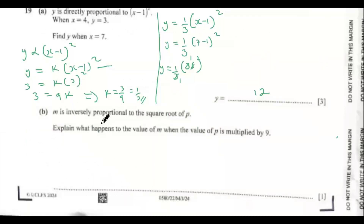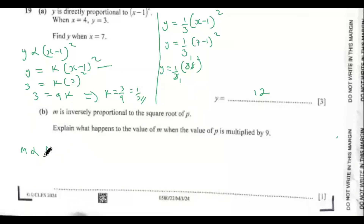Part b. m is inversely proportional to the square root of p. This means m = k / √p. We are asked to explain what happens to the value of m when the value of p is multiplied by 9.